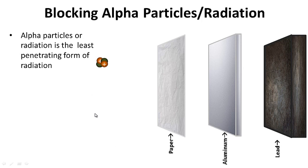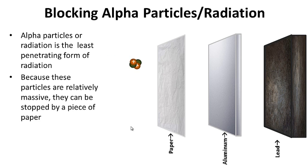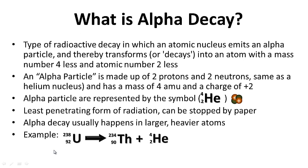Alpha radiation is the least penetrating form of radiation. Because these particles are relatively massive, they can be blocked by a piece of paper. For your notes, what is alpha decay? Question on the left-hand side, answer on the right-hand side. Go ahead and pause this while you write.